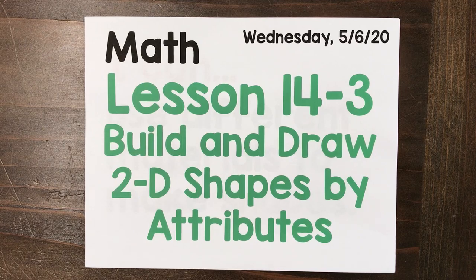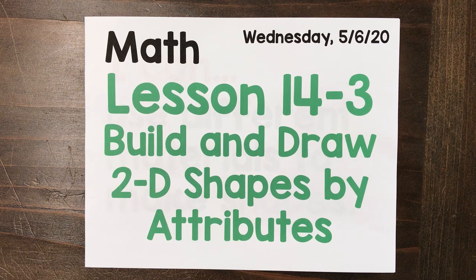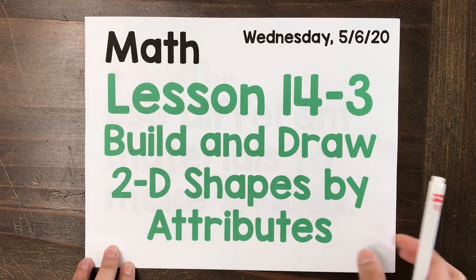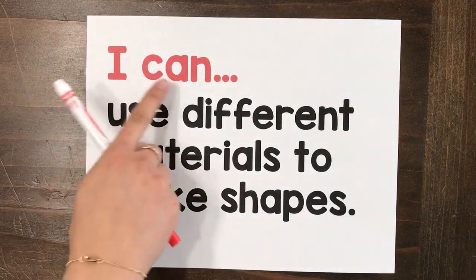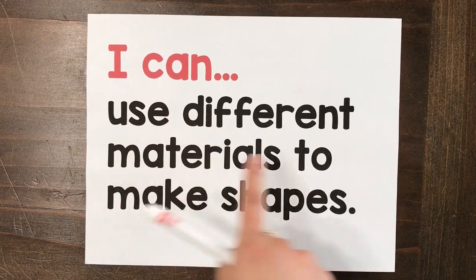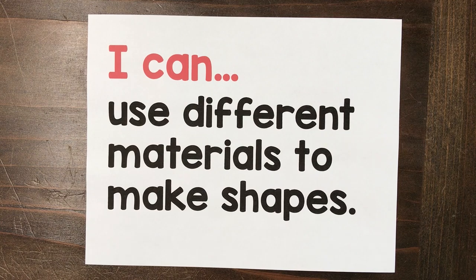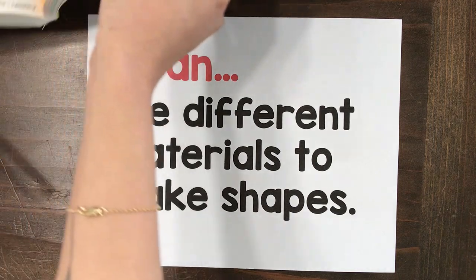Good morning! Today is Wednesday, May 6th, and we are on lesson 14-3. Today we are going to build and draw 2D shapes. I know you guys have done that a million times — we draw all these kinds of shapes anytime we're doing our art or anything like that. Our lesson objective for today: I can use different materials to make shapes. Now that we know what those shapes need to look like — how many sides they have, how many vertices, and what their sides need to look like, whether they're equal or different.